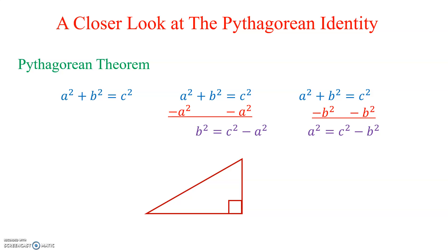The benefit of having this is we would typically apply the Pythagorean Theorem when working with right triangles. In a right triangle, our three sides would traditionally be labeled A, B, and C. So we would have a version of the Pythagorean Theorem designed just for solving for a particular variable.